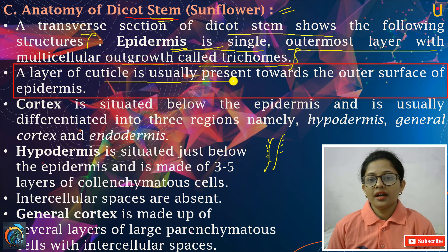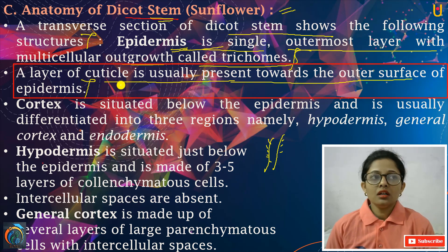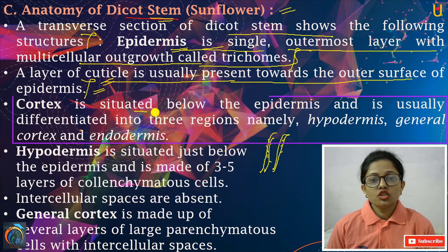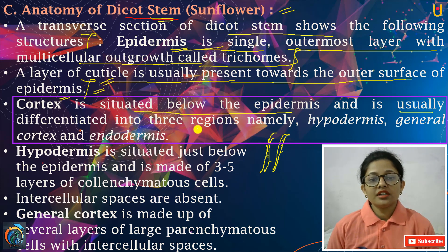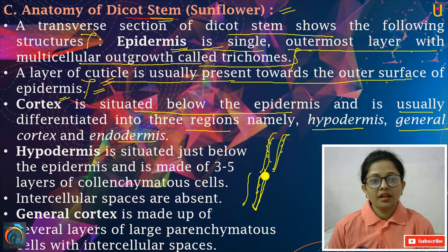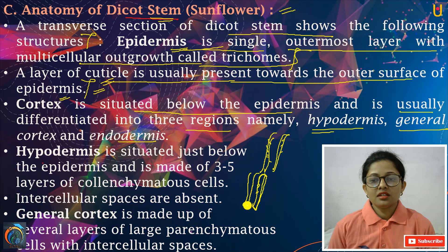A layer of cuticle is usually present towards the outer surface of the epidermis. Cuticle jo ki ek thick waxy substance hota hai — toh jo hamare epidermis layer hoti hai, plant ki outermost layer, uske bhi bilkul outer most present hota hai cuticle substance on the surface of the epidermis. Cortex is situated below the epidermis, and is usually differentiated into three regions: hypodermis, general cortex, endodermis. Suppose kariye yeh cortex ki layer hai — jo outermost layer hogi, jiski upar epidermis hai, aur epidermis ke andar hoti hai hamare cortex — toh cortex hamare teen regions mein divided hai.